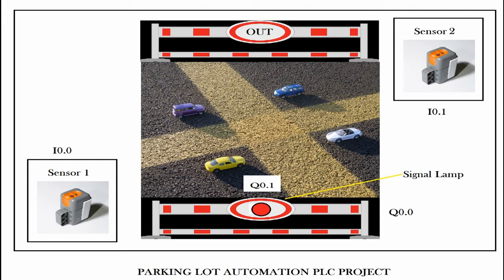Welcome to another session. Today we are going to talk about the assignment we discussed last session — that was about a parking lot automation PLC project. The parking lot has a capacity of four vehicles. If four vehicles are already inside, the parking lot will not allow any more vehicles to come in, and it is going to close the entry for upcoming vehicles.